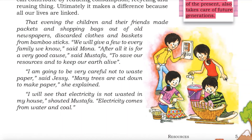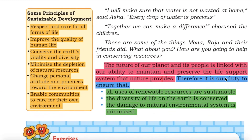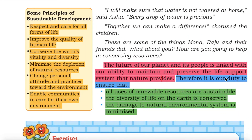I am going to be very careful not to waste paper, said Jessie. Many trees are cut down to make paper, she explained. I will see that electricity is not wasted in my house, shouted Mustafa. Electricity comes from water and coal. I will make sure that water is not wasted at home, said Asha. Every drop of water is precious. Together, we can make a difference, chorused the children.